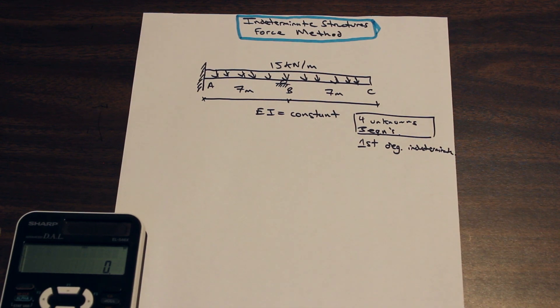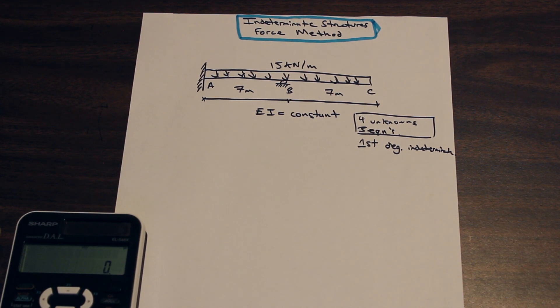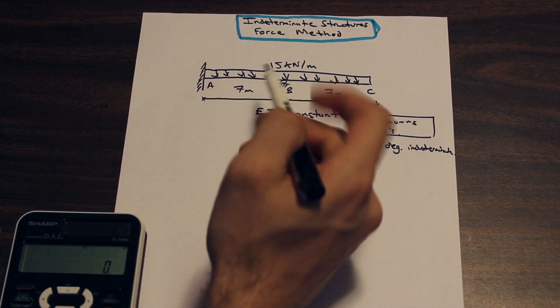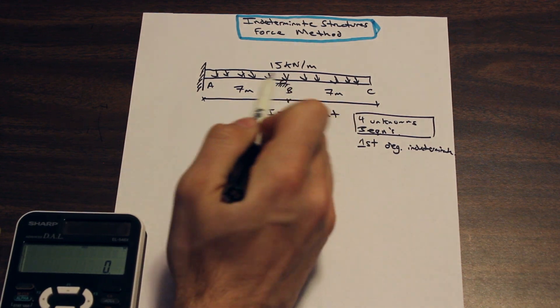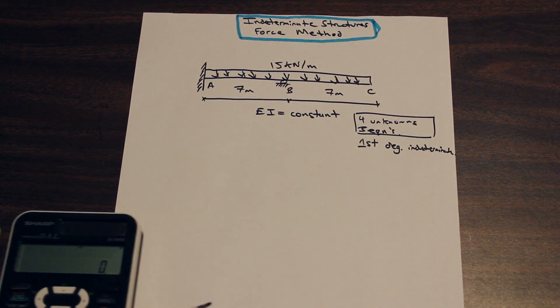So that means what is the degree of our indeterminacy? First degree indeterminate. So that means that we're going to need to select a support and we're going to need to make it redundant. And what that is going to mean is that we're going to have to replace that redundant support with a unit force. So let's go ahead and do that. And in this question, we're going to select b as our redundant force. And that's just going to give us a fixed cantilever beam.